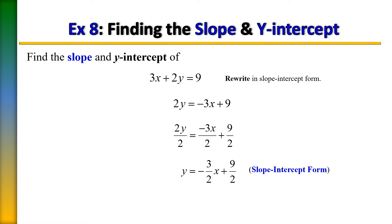When it's in this form whatever is in front of x is your slope. Now it doesn't include x, it's just whatever is in front of x. In this case it's negative 3 halves. So that is my slope.